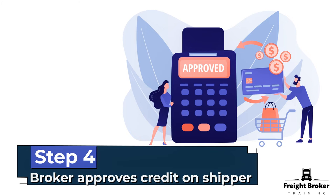Step number 4: You as a broker approve credit on shippers if they are a first-time shipper. A lot of times shippers don't want to fill out credit apps before they are ready to send loads to you. Sometimes it can be a concern, but ultimately if it's a first-time shipper, you are going to have to run credit on them. You can use a factoring company — they are going to help you do it — but ultimately you have to run and approve credit.